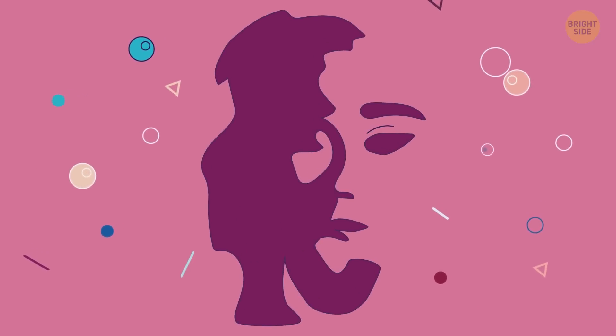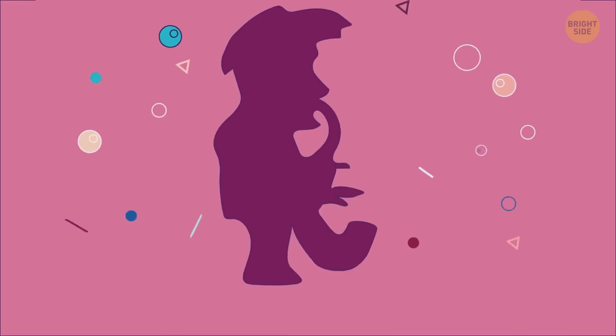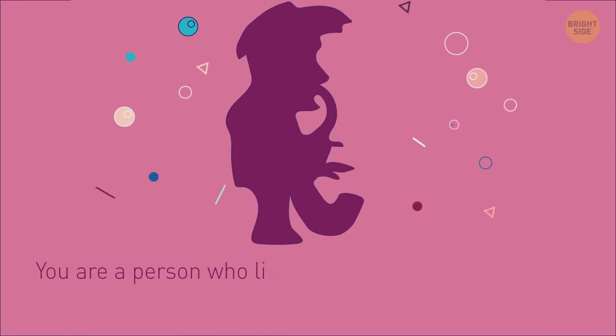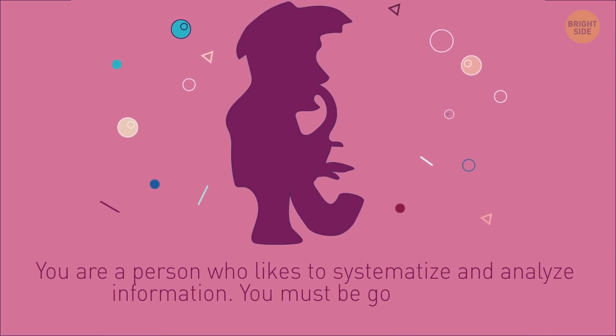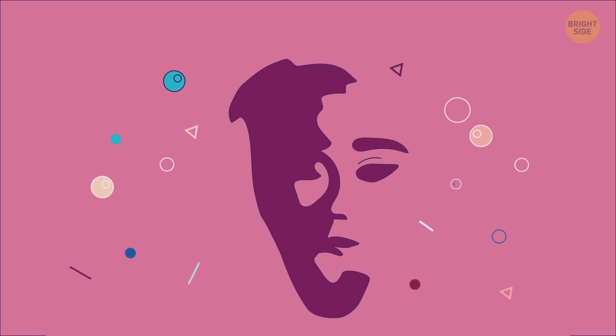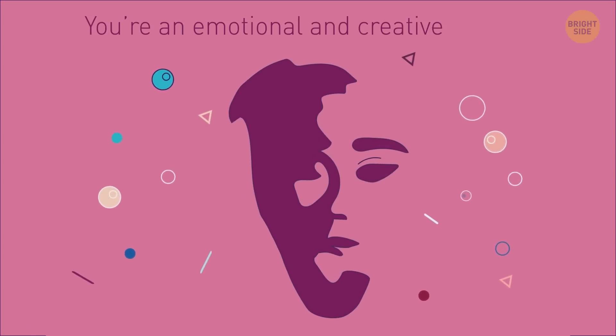Creativity against analytics? Hmm, what do you see? If the red saxophonist is the first thing you see, then you are a person who likes to systematize and analyze information. You must be good at math and foreign languages. And if you see a portrait of a woman here, then you're an emotional and creative person.